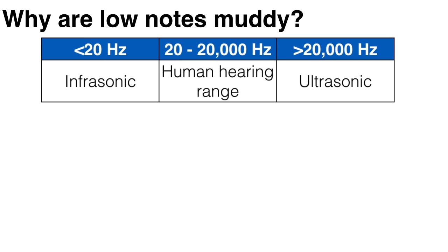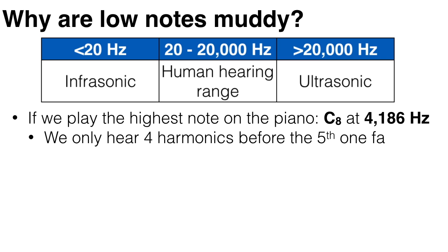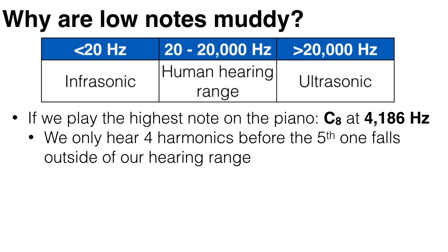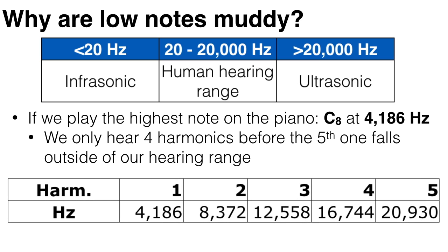Whereas if we play the highest note on the piano — C at 4,186 hertz — then we only hear four harmonics before the fifth one falls outside of our hearing range. So this note is relatively weak and simple; we only hear four frequencies instead of the scores that we heard with the low A note.